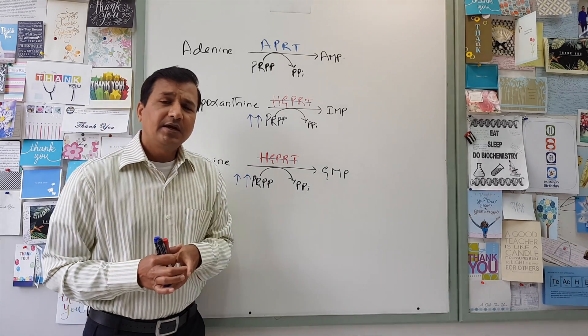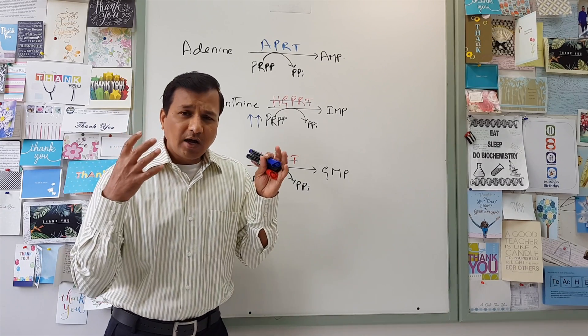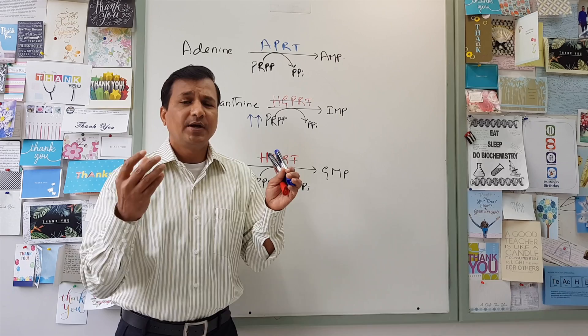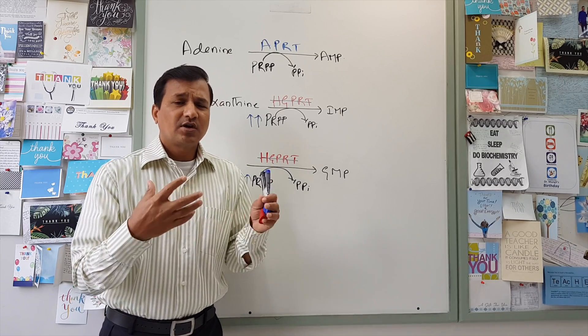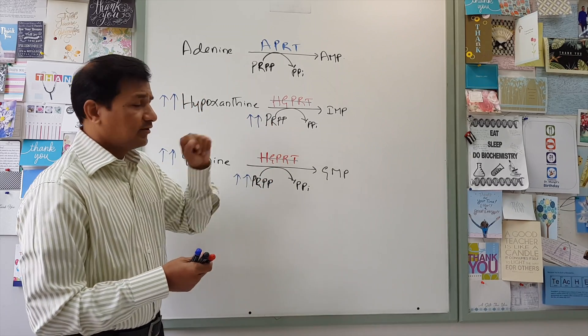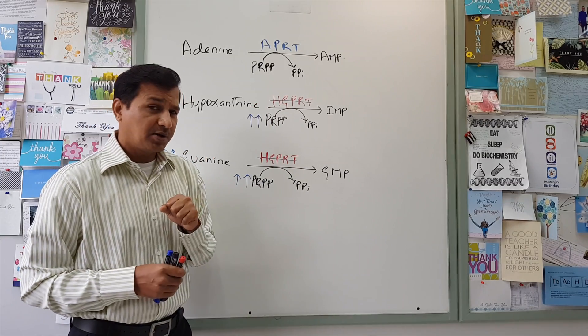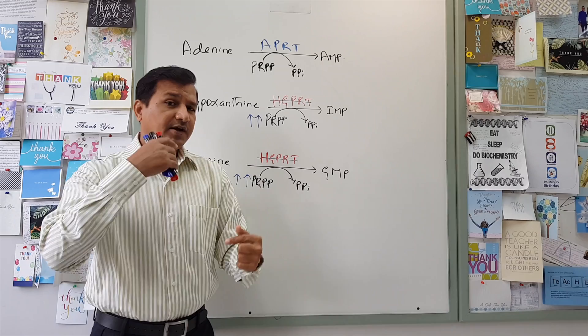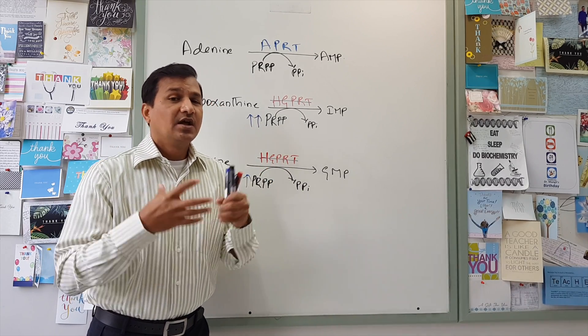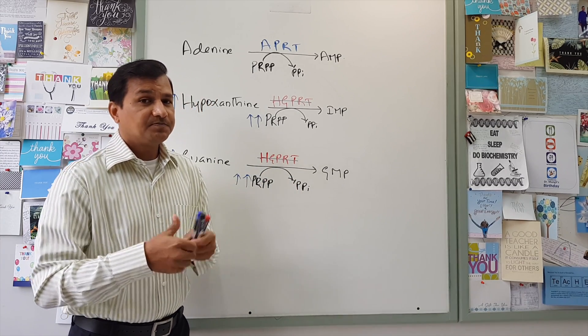Now, the elevated PRPP is going to stimulate or it is a positive modulator for a highly regulated enzyme in purine nucleotide biosynthesis, that is glutamine-phosphoribosyl-amidotransferase, which is also referred as PRPP-glutamyl-amidotransferase. So this enzyme activity is increased because there is elevation of PRPP. So in the Lesch-Nyhan syndrome, what happens is there is complete absence of HGPRT, there is elevation of PRPP, and this elevated PRPP is going to keep your glutamine-phosphoribosyl-amidotransferase, one of the highly regulated enzymes in the de novo pathway of purine synthesis, active.